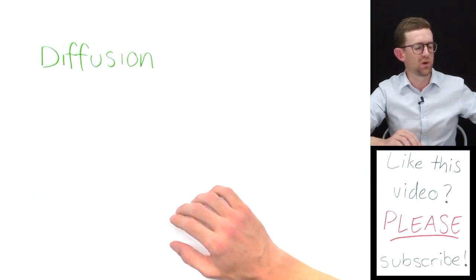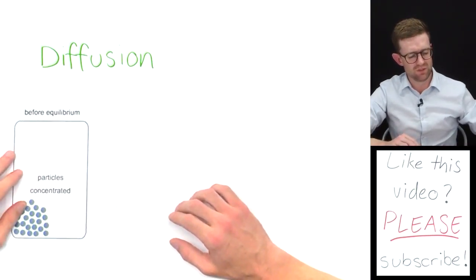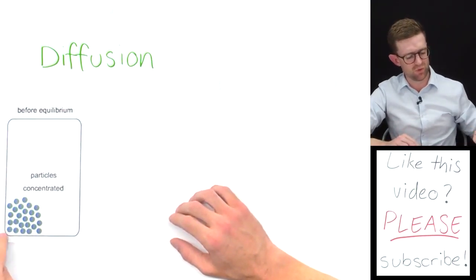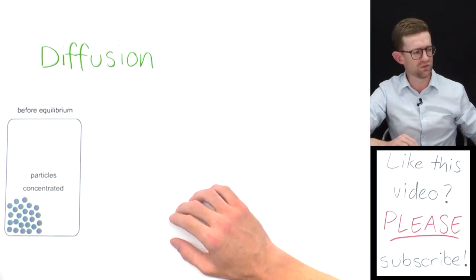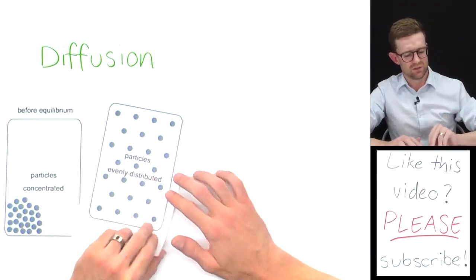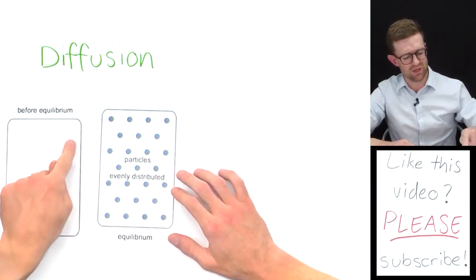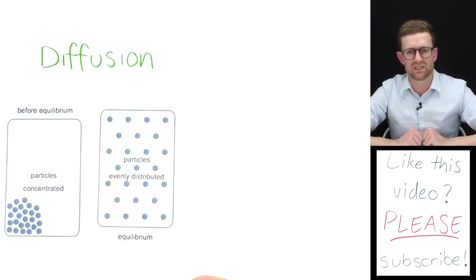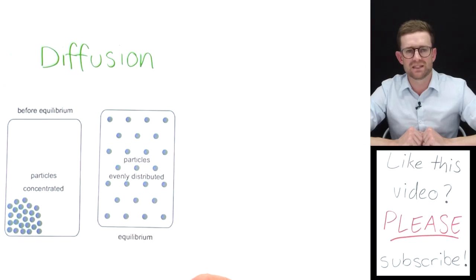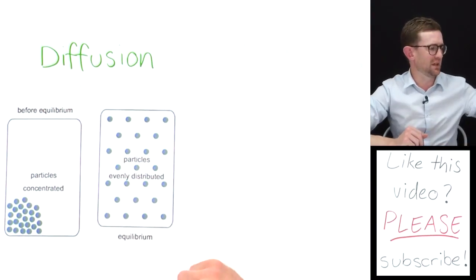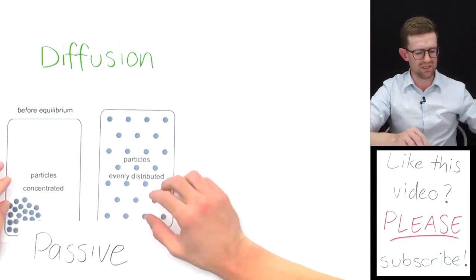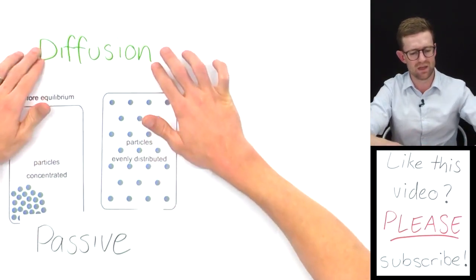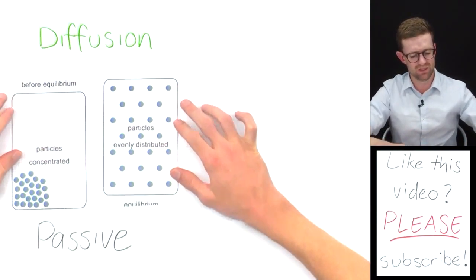Just a reminder: diffusion is where substances move from an area of high concentration to an area of low concentration until they become evenly distributed in a space. That's a process that occurs in a passive way, which means it doesn't require any energy.